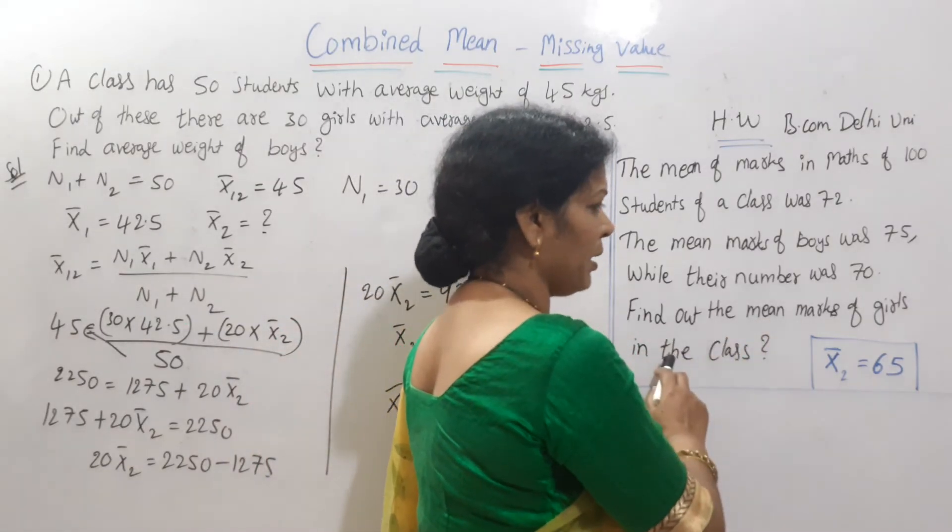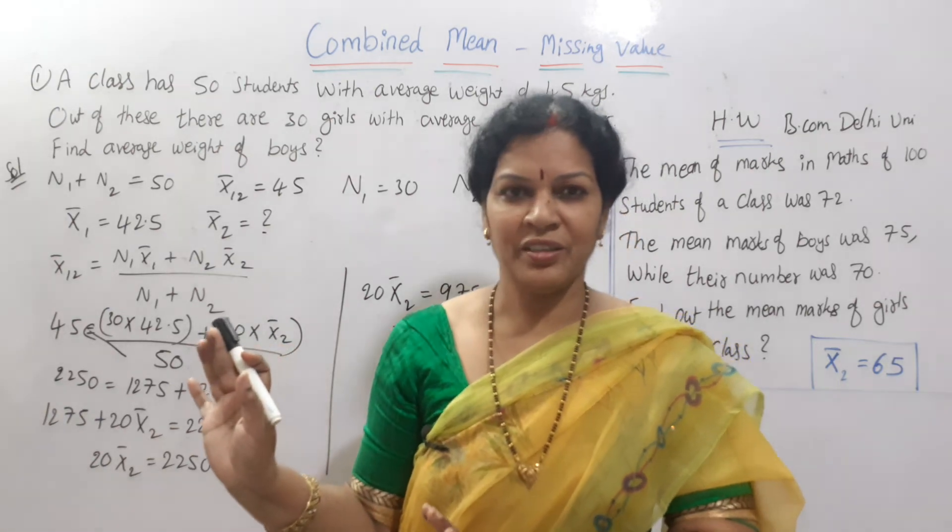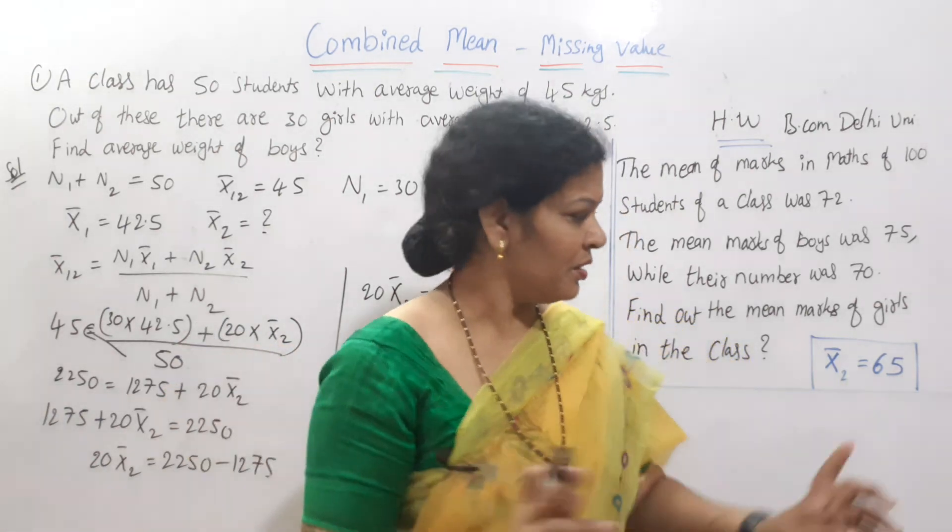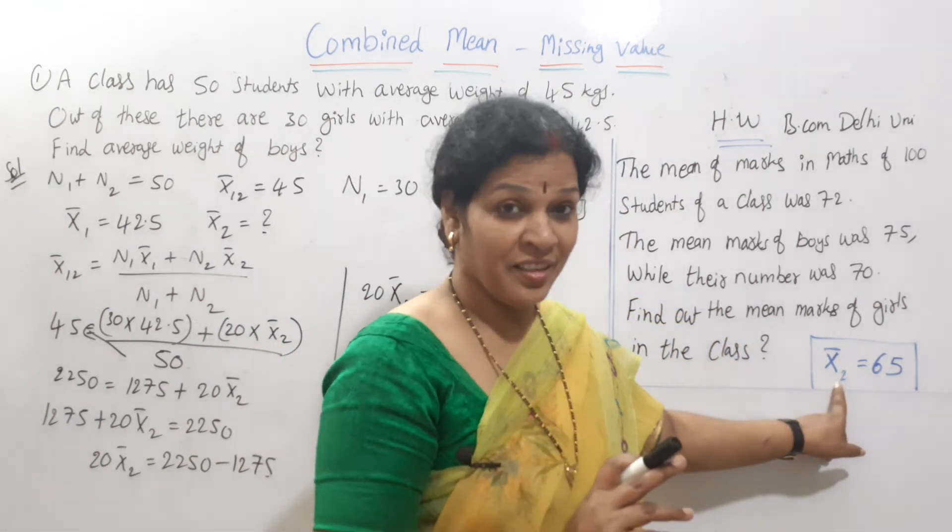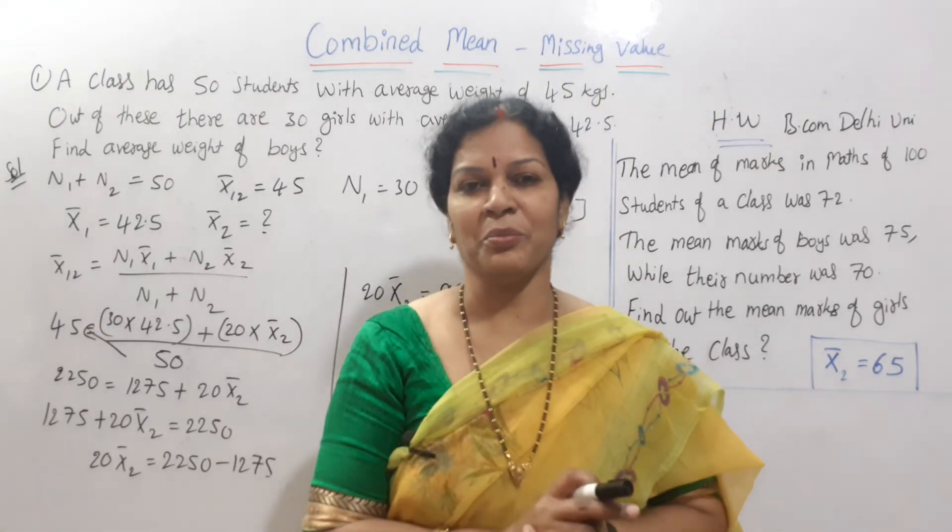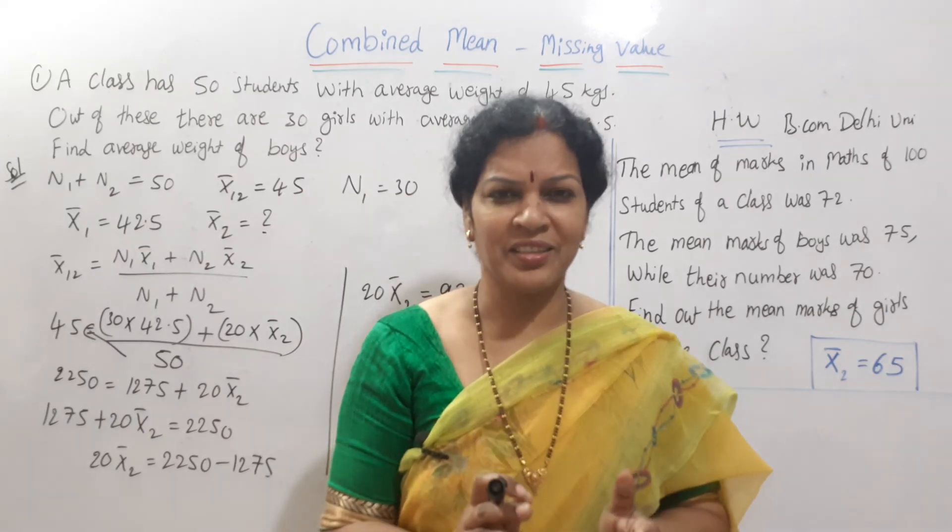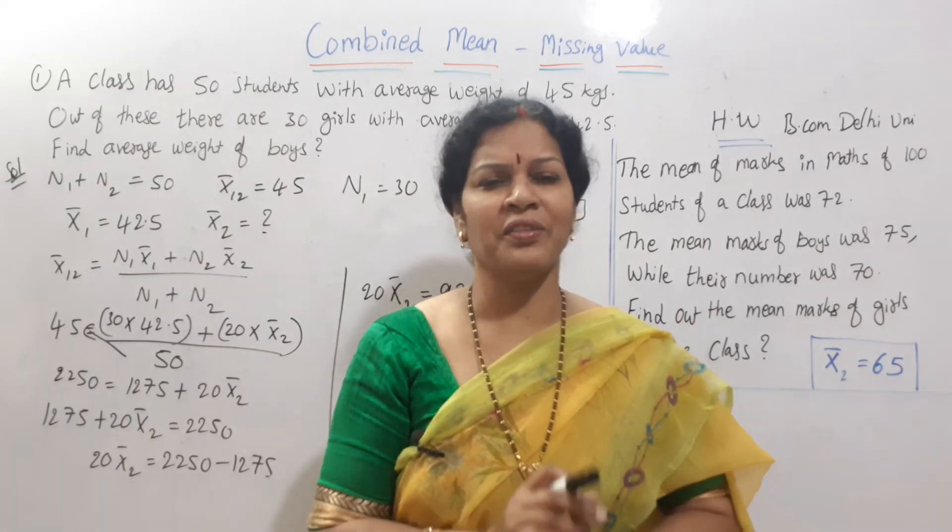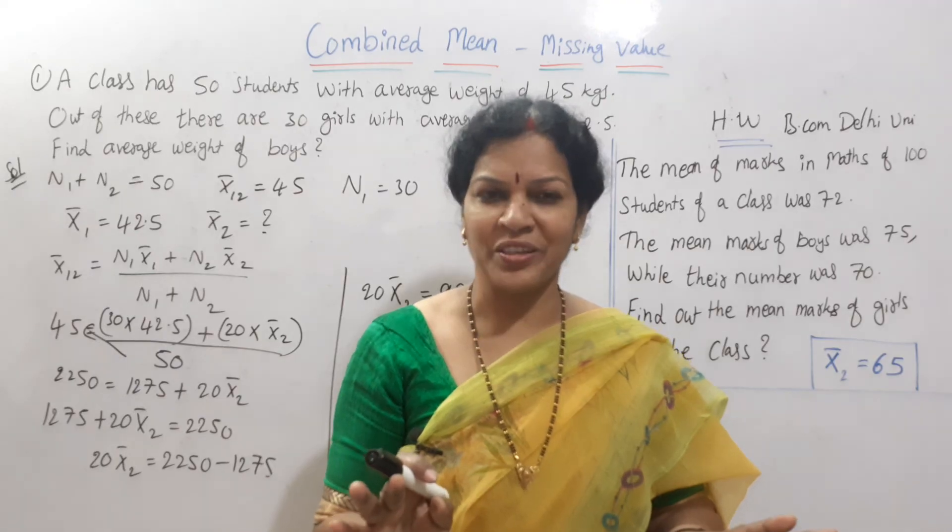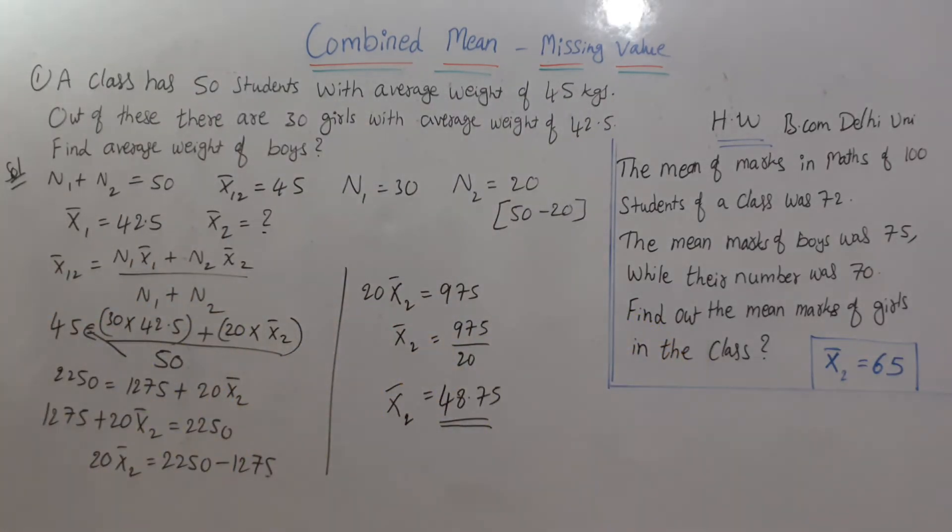Find out the mean marks of the girls in the class. Same like this problem. Clear? Can you work out? The answer is this: X bar 2 is 65. If you are getting the same answer, please write it in the comment box. I will be waiting for your answers. Stay connected. Check out our channel. Use it, everything is free of cost. Don't forget to share this video. Good luck. Thank you.